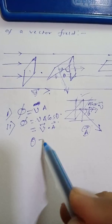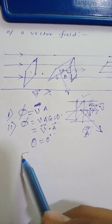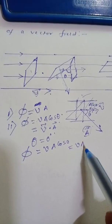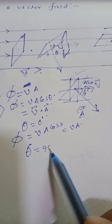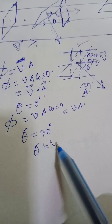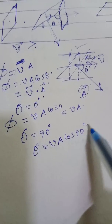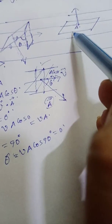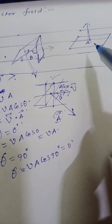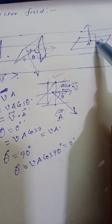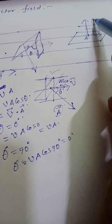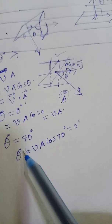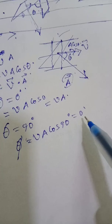Vectorially we write it as V dot product A. If theta is equal to 0 degrees, then the flux crossing through the area will be maximum — that will be V A cos 0, which is equal to V into A. If theta is equal to 90 degrees, then the flux phi is equal to V A cos 90 degrees, and that is equal to 0. You can see the third figure — the direction of area vector and velocity vector have an angle of 90 degrees between them, so this is the case of theta equal to 90 degrees, giving flux equal to 0.